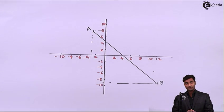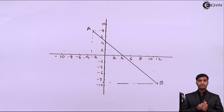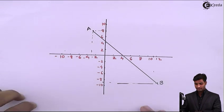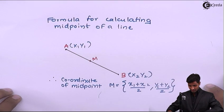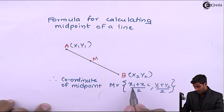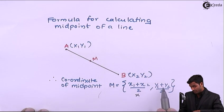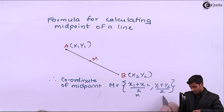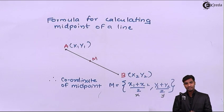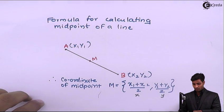Line AB is to be rotated about its midpoint, with rotation of 90 degrees counterclockwise. First we have to find the midpoint of line AB. The formula for calculating midpoint is: x-coordinate = (x1 + x2) / 2, and y-coordinate = (y1 + y2) / 2. We add both x-coordinates and divide by 2, and similarly for y-coordinates.